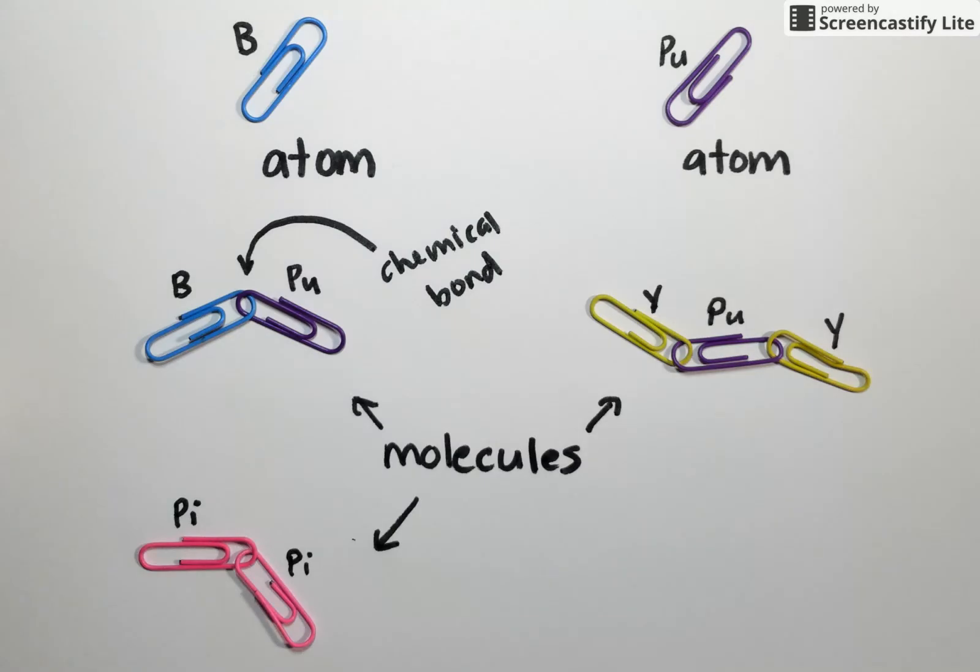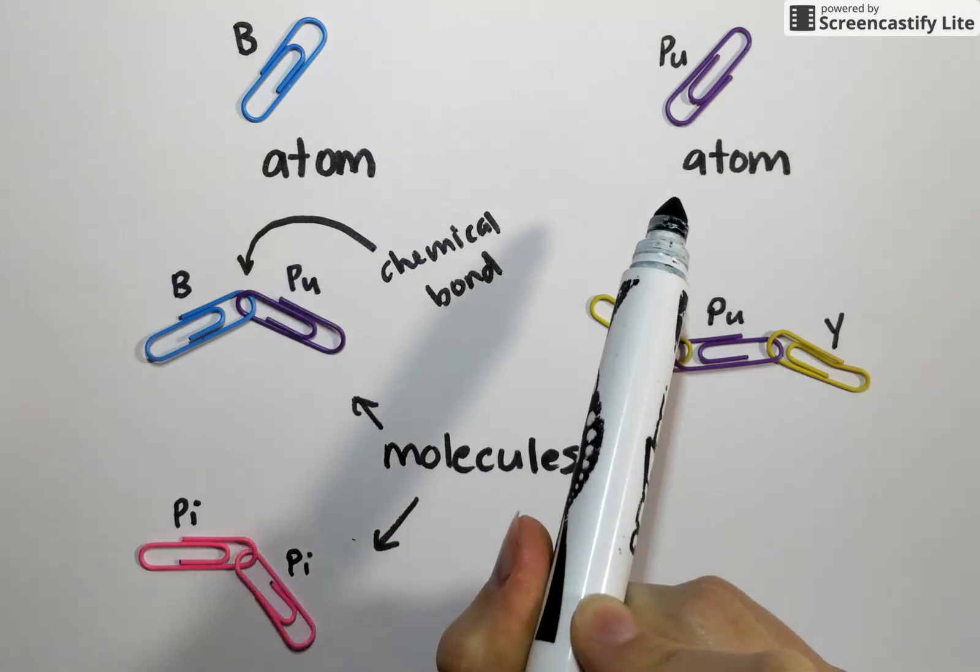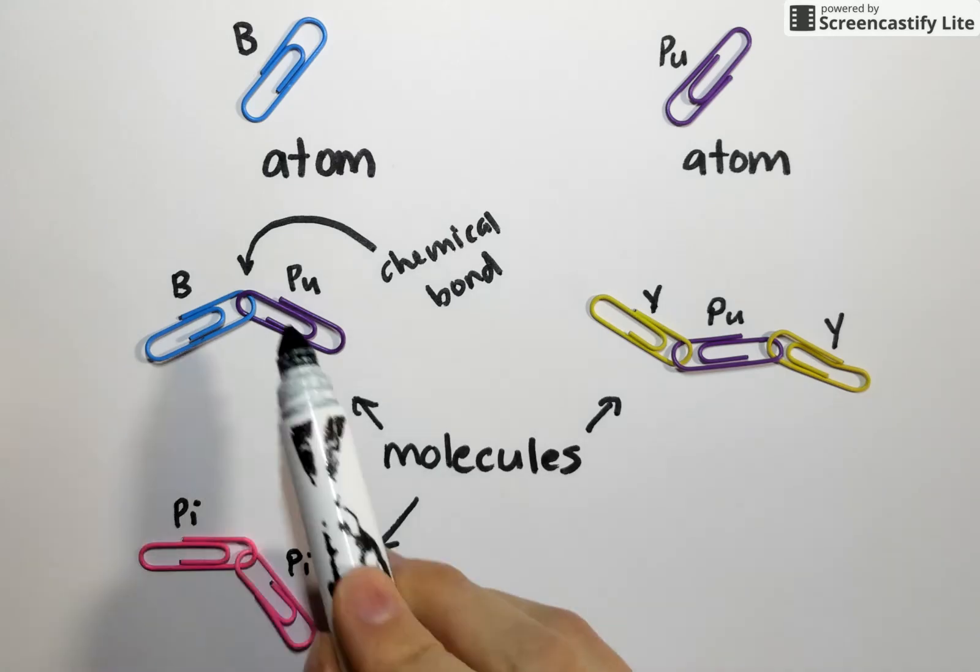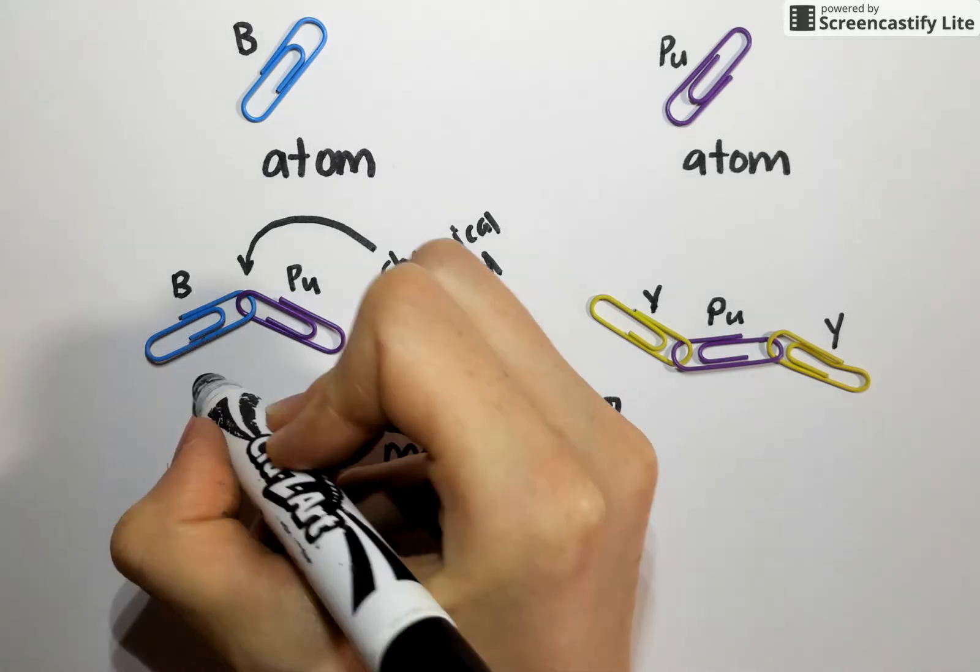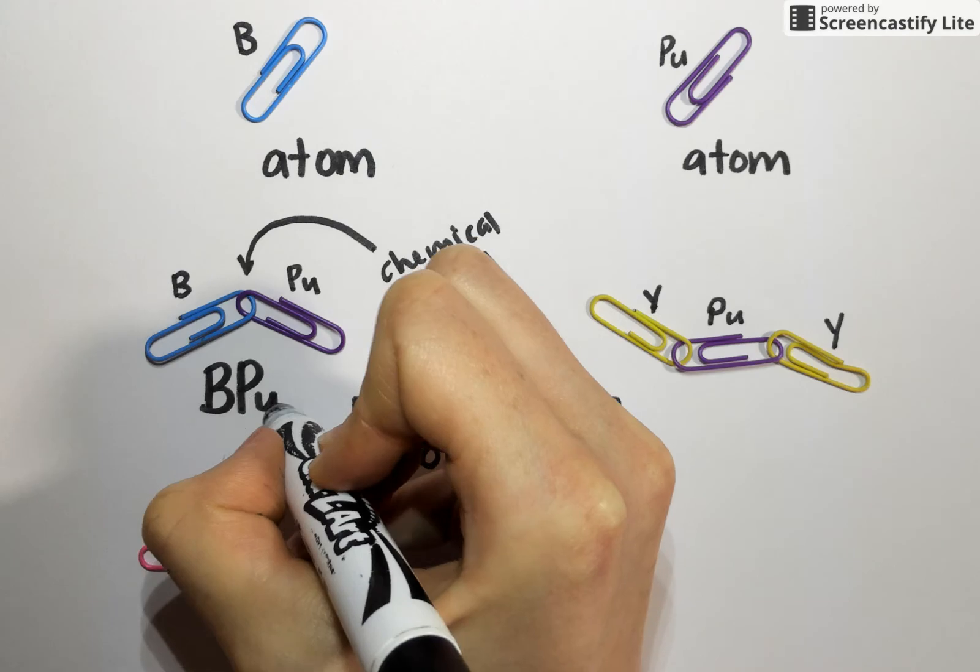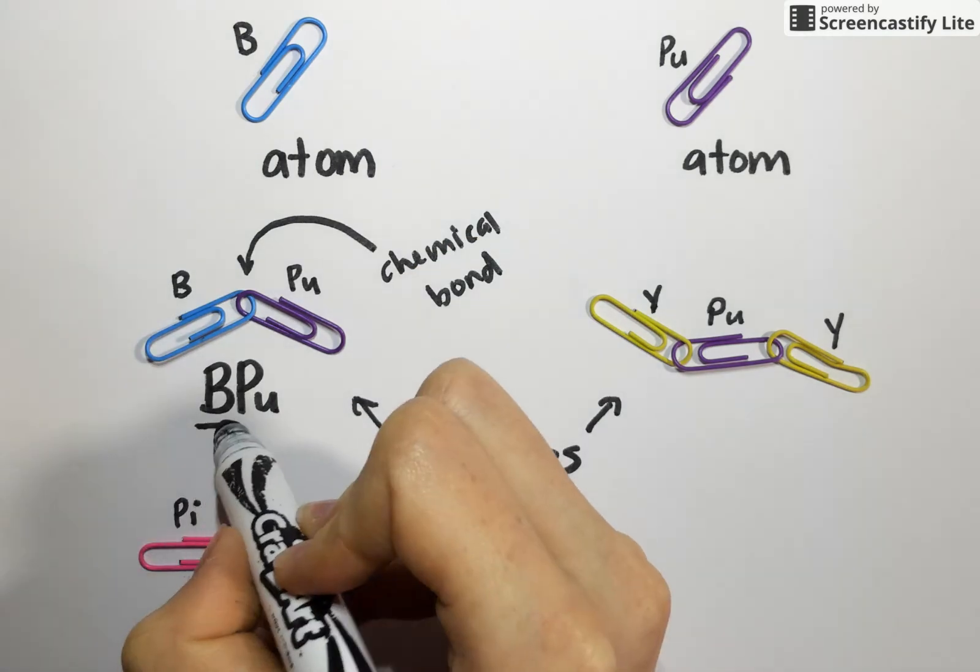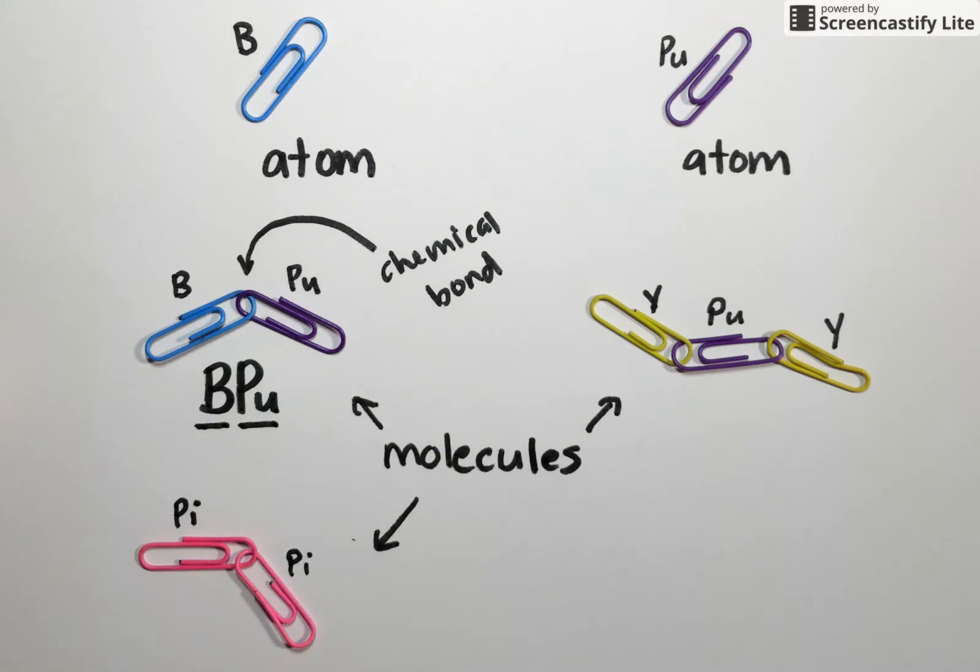You can see there's a wide variety of different types of molecules we can form by using chemical bonds. Here in the top left I've linked together an atom of B and an atom of PU to form a new structure. I'm going to name that structure by linking together the chemical symbols, so this particular molecule is going to be called BPU. Notice I've paid attention to where the capital letters are: one atom of capital B and one atom of capital P lowercase u.